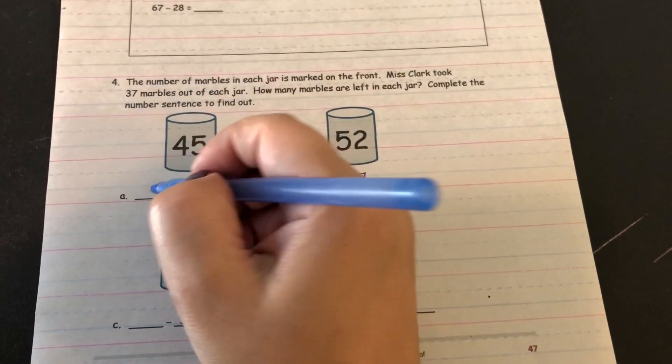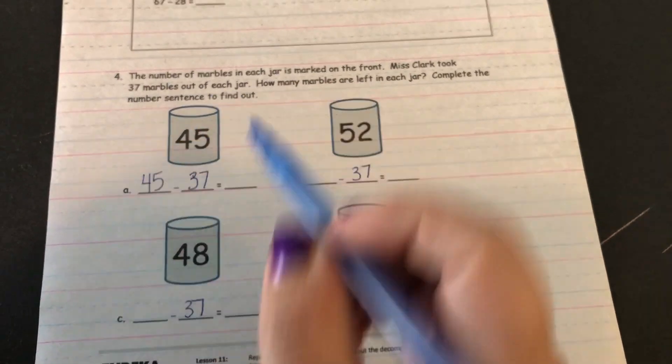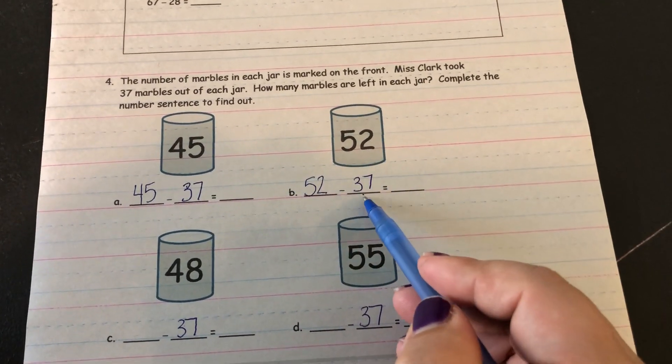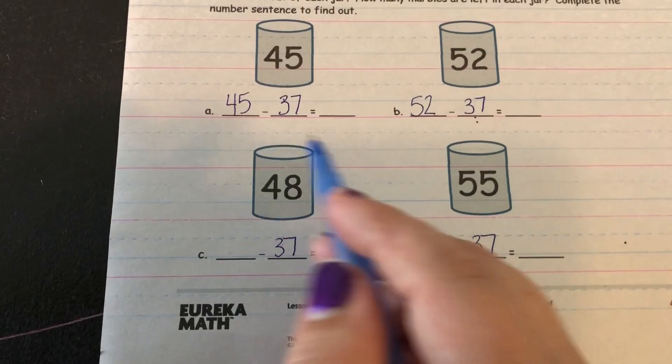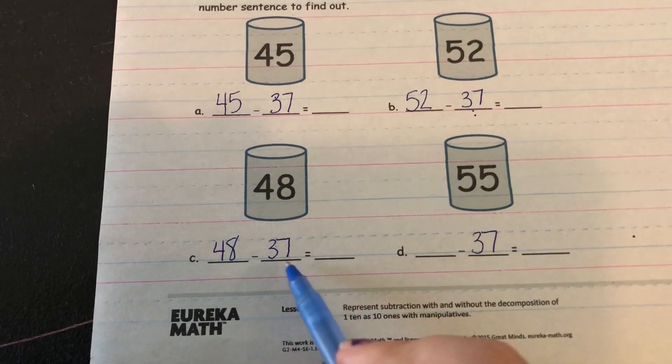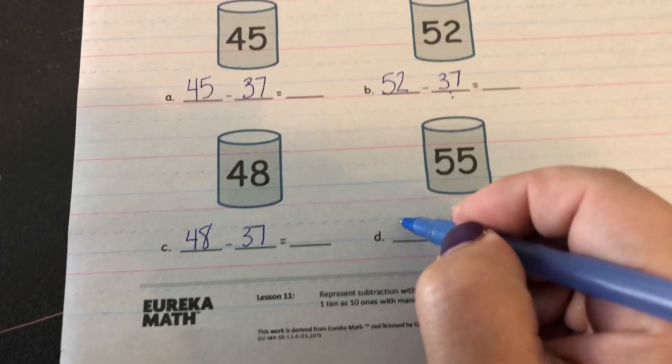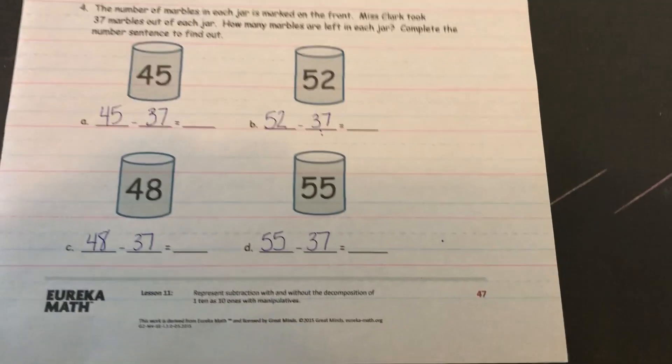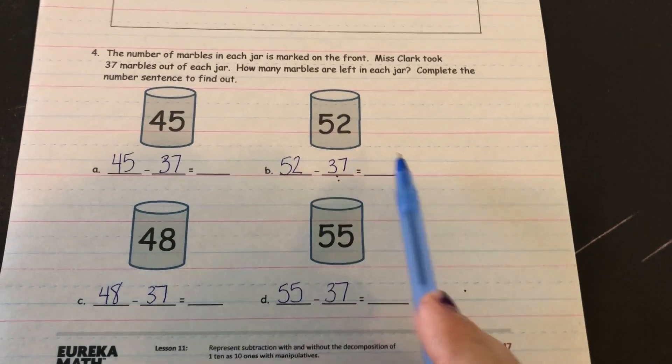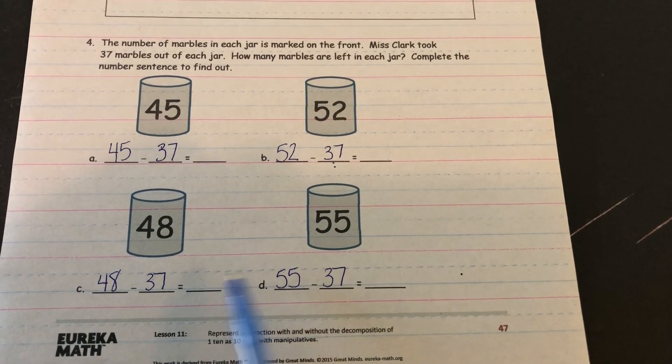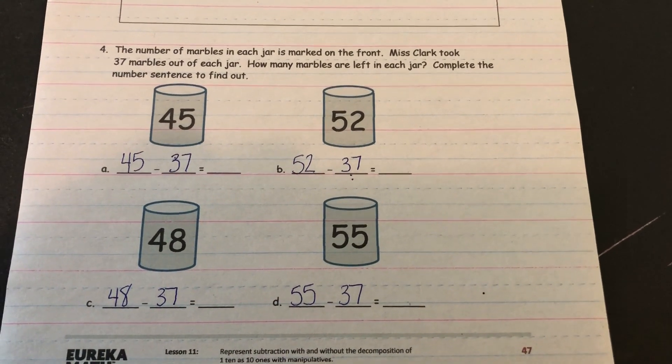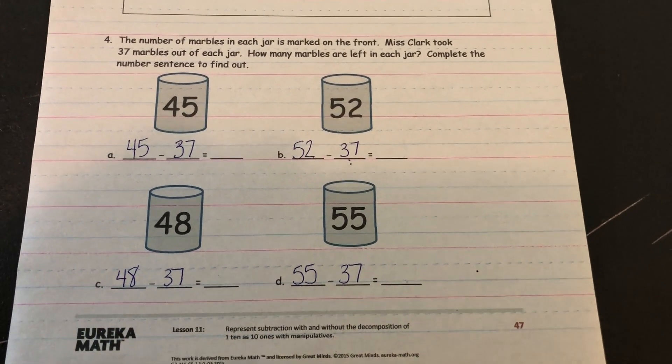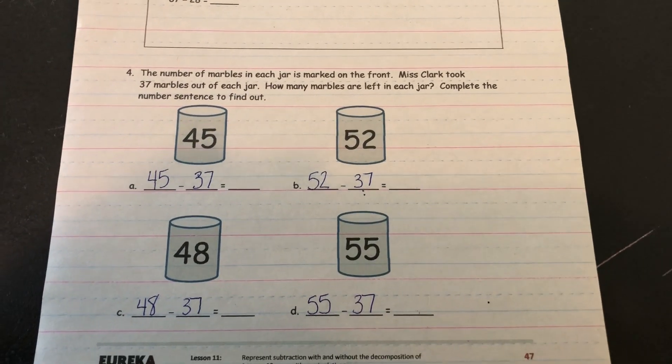And it says the number of marbles in each jar is marked on the front. So it started with 45 and she took out 37. This one started with 52 and she took out 37. This one started with 48 and she took out 37. And this one started with 55 and she took out 37. Your job is to figure out how many marbles are left. And you can use any strategy you want to do it. And for some of these, looking at this one, you'll be able to do it mentally. All right guys, I hope this was helpful. See you tomorrow in class.